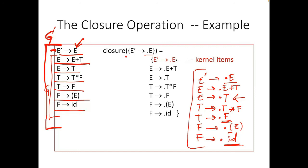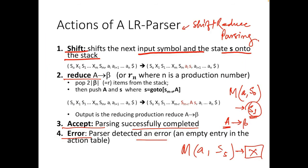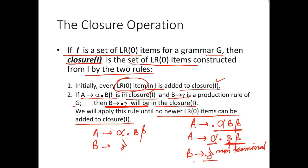All these items were generated due to the initial production rule E dash to dot E, which we call the kernel item. The stopping condition is that we apply the closure rules until no new production rules can be added where the dot is not yet at the end — that is, we stop when for each generated item, the dot has reached the end.